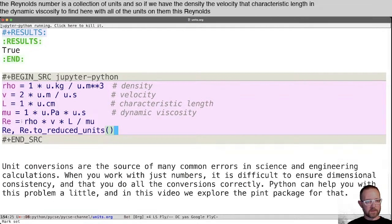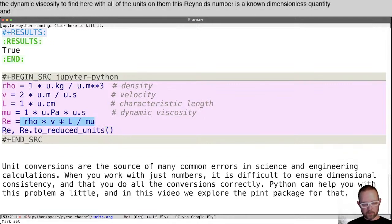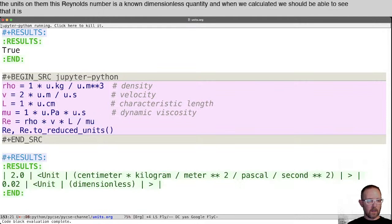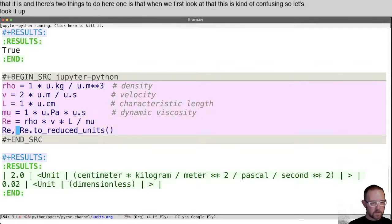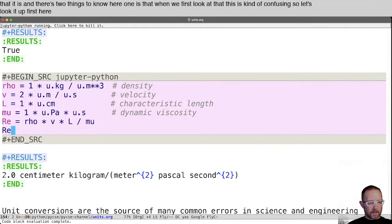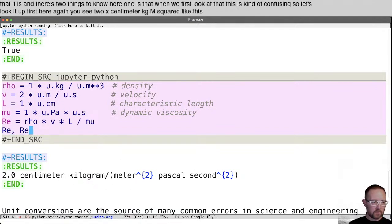And there's two things to note here. One is that when we first look at at this, this is kind of confusing. So let's look at it first here. Again, you see two times centimeter, kilogram, meter squared, like this. But in fact, if we ask, are the units dimensionless? Yes. Then you see that the answer is is true.